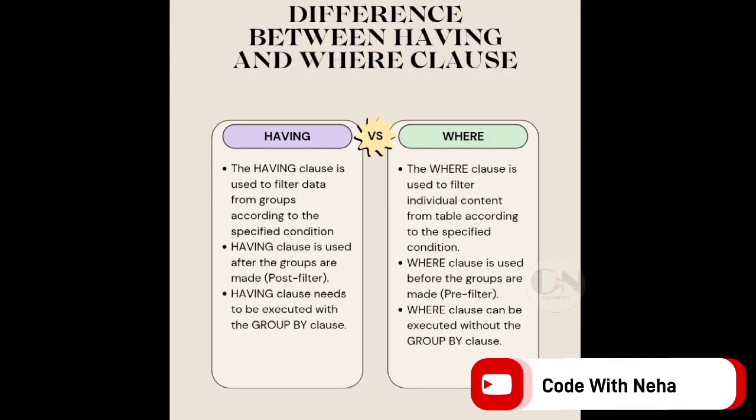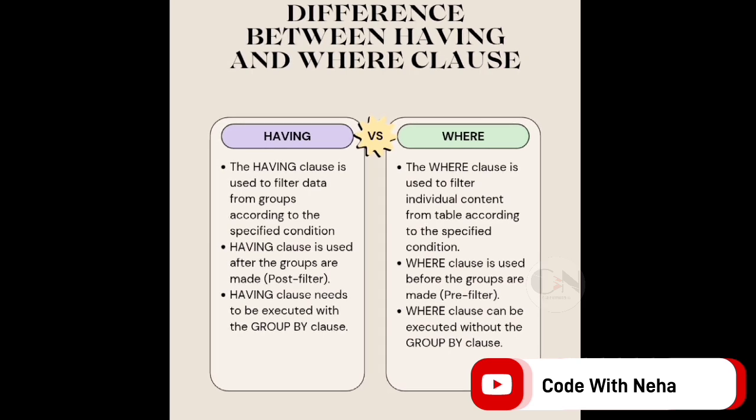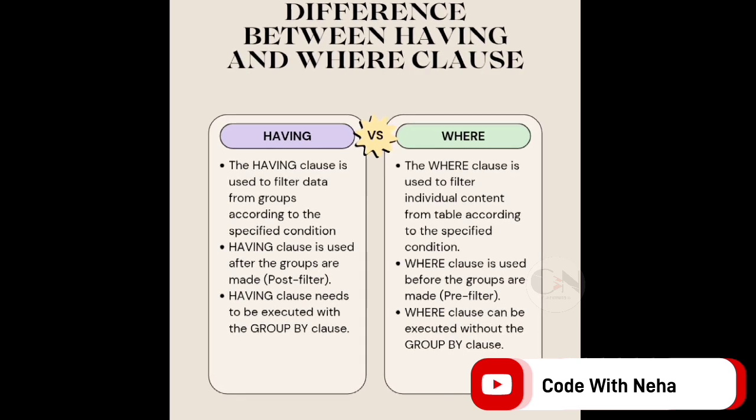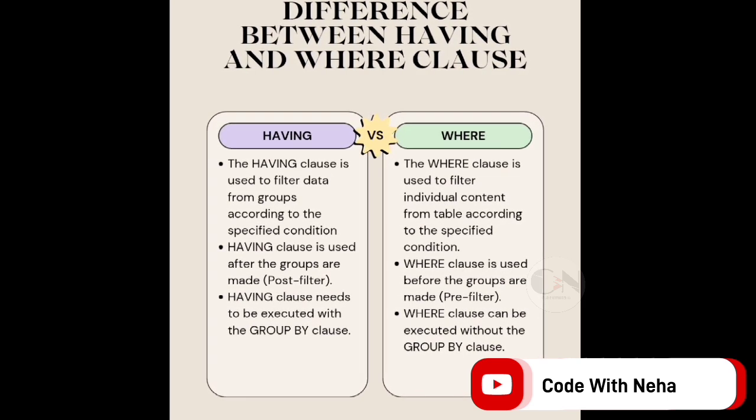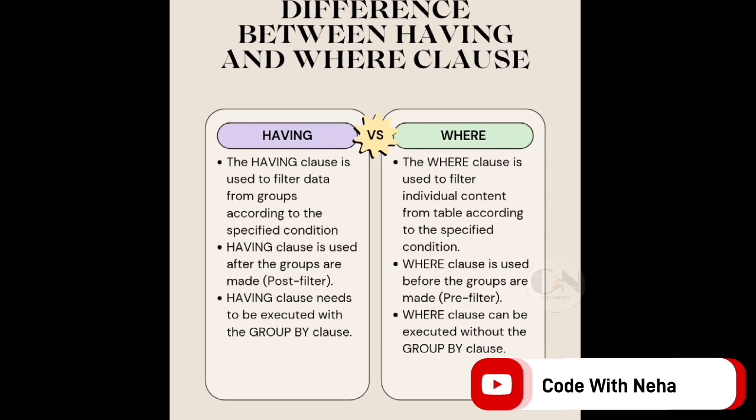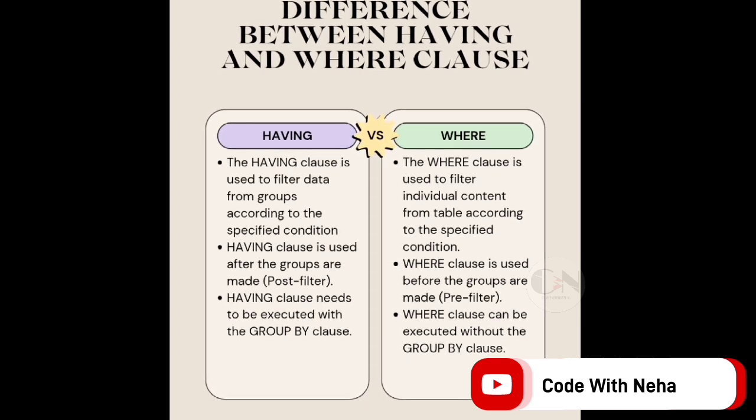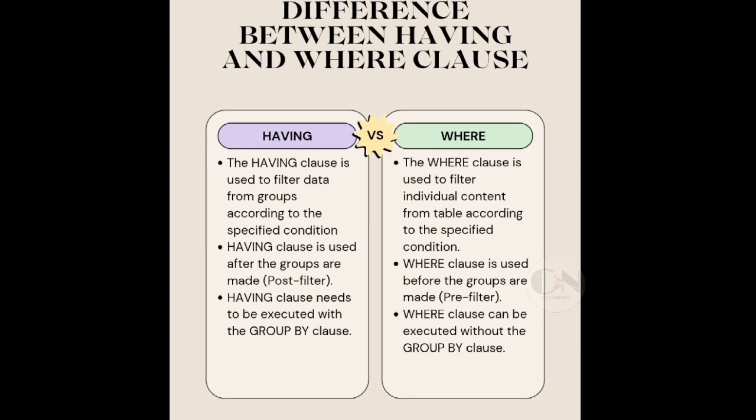The having clause is used to filter data from groups according to the specified condition, whereas the where clause is used to filter individual content from table according to the specified condition.